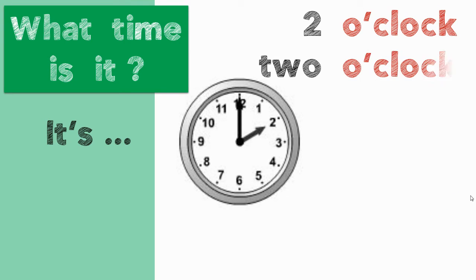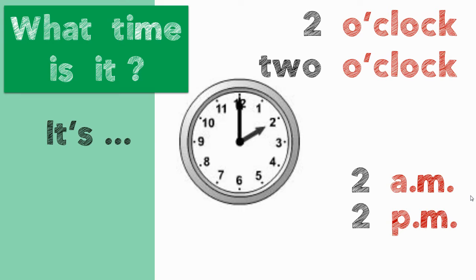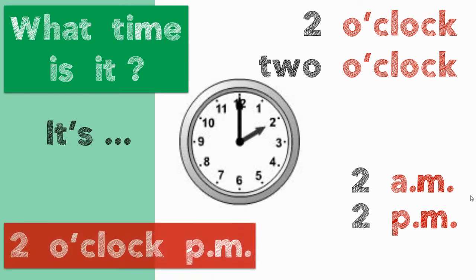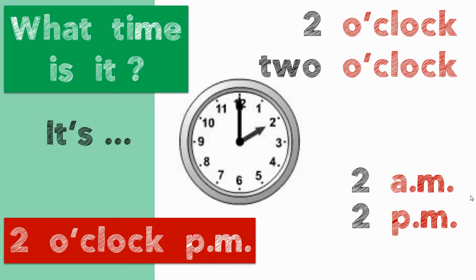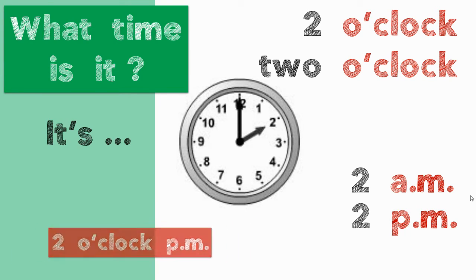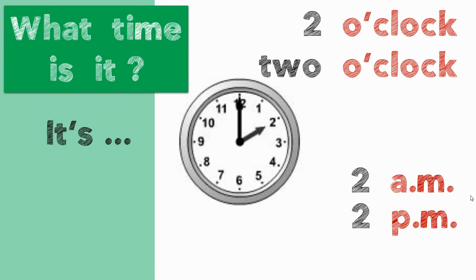What time is it? It's 2 o'clock. It's 2 a.m. or 2 p.m. Can you say 'it's 2 o'clock p.m.'? No, that's a mistake. We don't use o'clock and p.m. together. We say it's 2 o'clock, or it's 2 a.m., or 2 p.m.